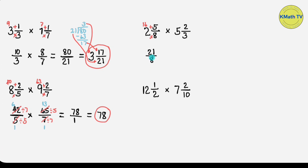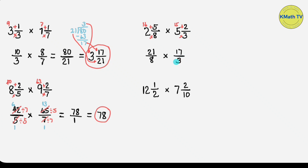Now let's convert the multiplier. Change 5 and 2/3 to an improper fraction. Multiply the denominator and the whole number: 3 times 5 equals 15. Then add the numerator plus 2: 15 plus 2 equals 17. This is the new numerator. Copy the denominator: 3. We already changed the mixed numbers to improper fractions.